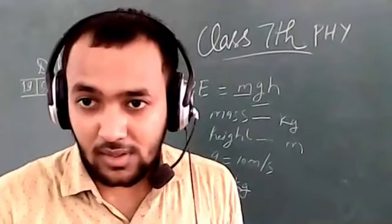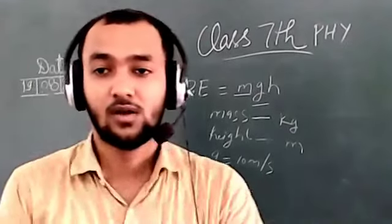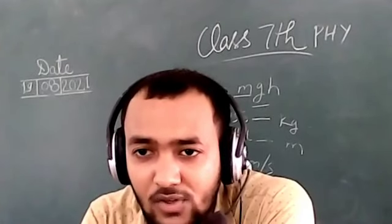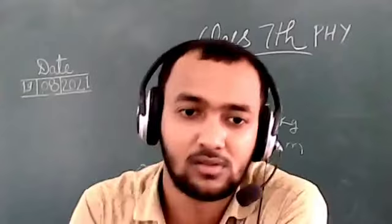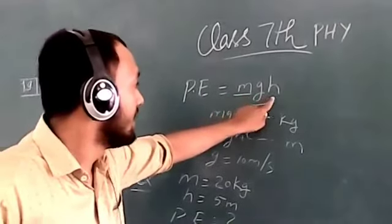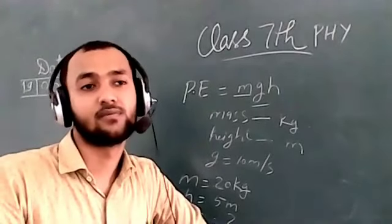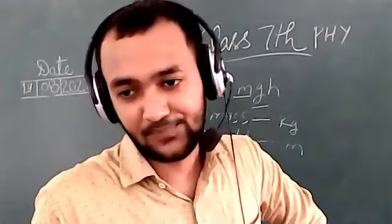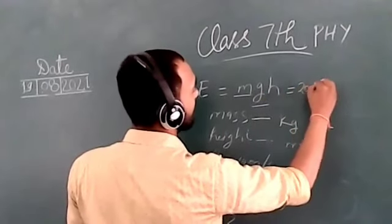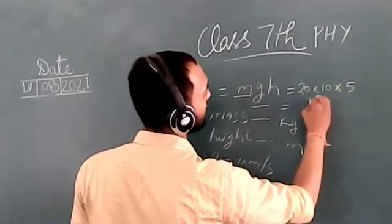Students are asked to solve: mass = 20 kg, height = 5 m, g = 10. Potential energy = m × g × h = 20 × 10 × 5 = 1000 Joule. The SI unit of energy is Joule. Since potential energy is a form of energy, its SI unit is also Joule — so the potential energy is 1000 Joule.